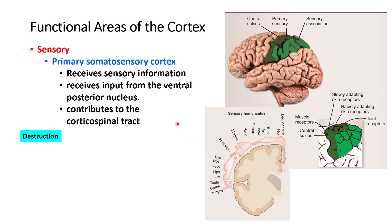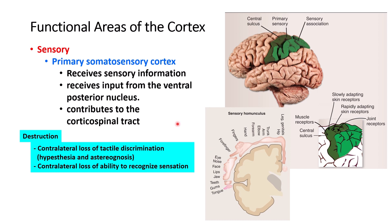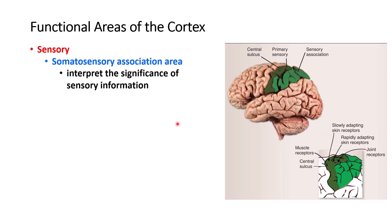If the primary sensory cortex is damaged, you can get contralateral loss of tactile sensation — hypoesthesia, meaning decreased sensation. You also get loss of stereognosis, meaning the person cannot recognize forms by touch. This is contralateral because sensory pathways cross the midline.